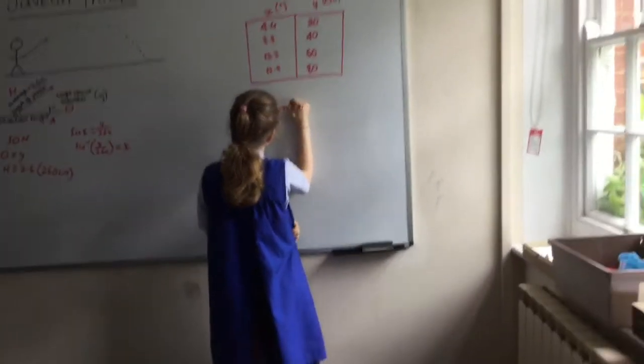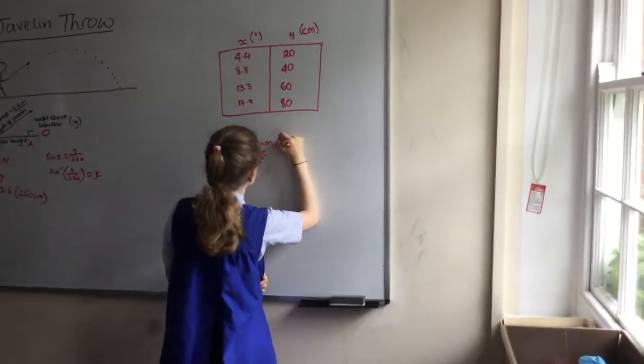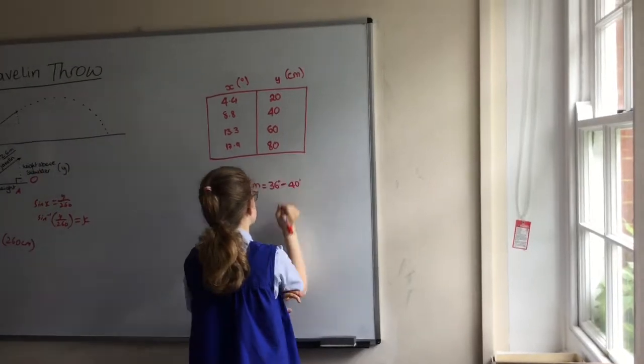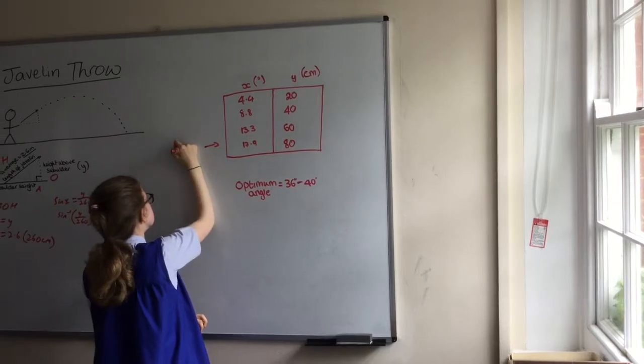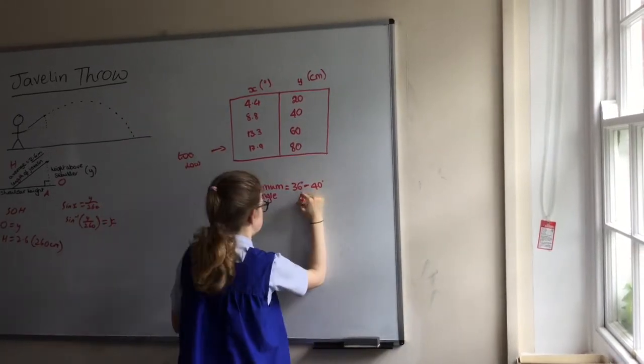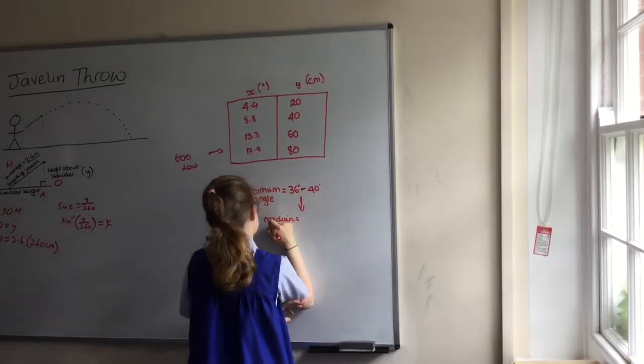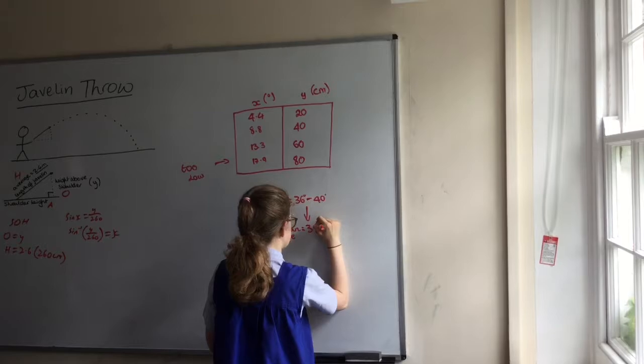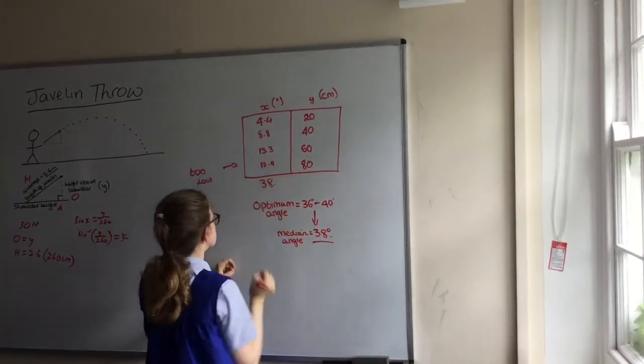We then realised that actually our height was too low. So we looked on the internet to see the optimum angle for a javelin to be thrown. It was somewhere between 36 degrees and 40 degrees, so we used the median angle, 38 degrees.